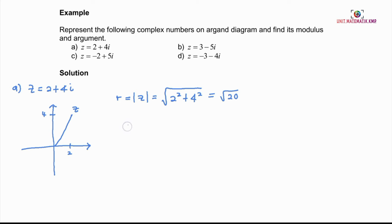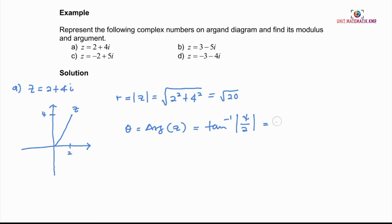To find the argument theta, we look at the Argand diagram and identify that Z is in the first quadrant. The formula for theta is tangent inverse of 4 over 2. Using a calculator, we get 1.11 radians. Please note that the unit of theta must be in radians.